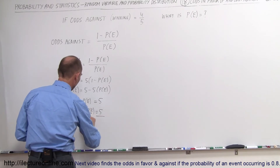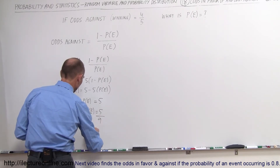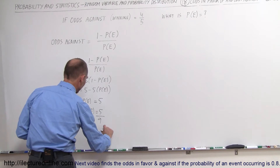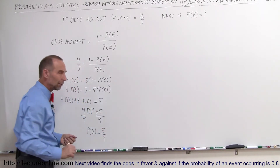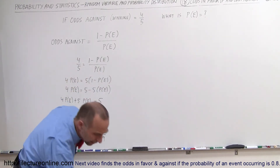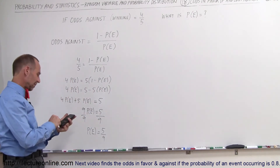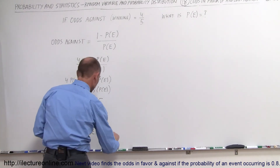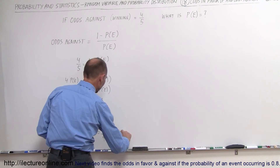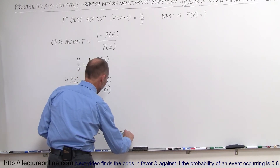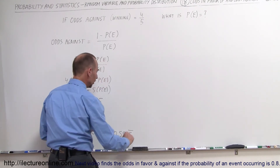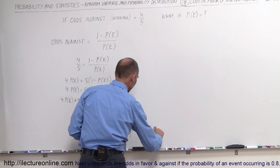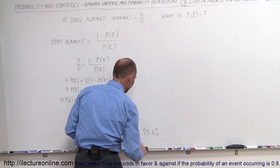Divide both sides by 9, and we get the probability of the event occurring is equal to 5 divided by 9. When we convert that to a decimal, 5 divided by 9 is 0.5555 repeating — so this is basically 55.6%.